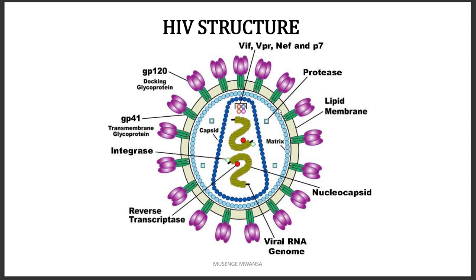The protein matrix is made up of a protein called p17 — where 'p' simply stands for protein. Then we have the capsid, which is the layer embedding the two RNA molecules. The capsid is made up of the protein p24.